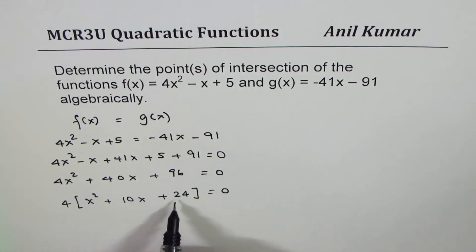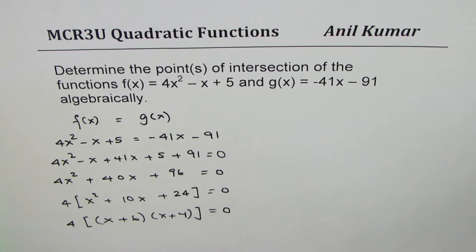Now, inside we're looking for a product of 24, sum of 10, which is 6 times 4. So we could write this as (x + 6)(x + 4) = 0.